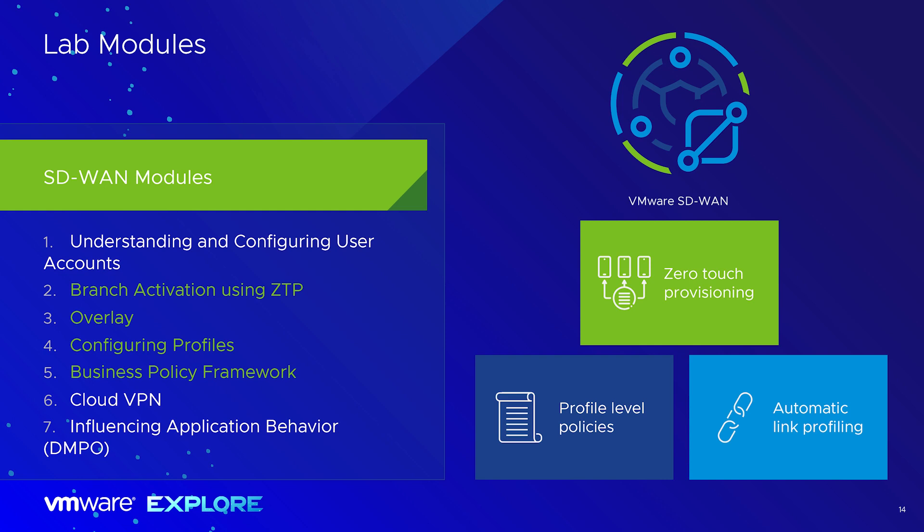Today in the lab there are seven modules. We're going to skip intro module one and start directly with zero-touch provisioning of an edge device — deploying the Chicago edge. We'll configure overlays and edge profiles before applying a business policy to restrict or redirect certain traffic. The last two labs, time permitting, are Cloud VPN and DPMO. Laszlo, Ron, Frank, and myself are all here to answer any questions. And now — lab time.